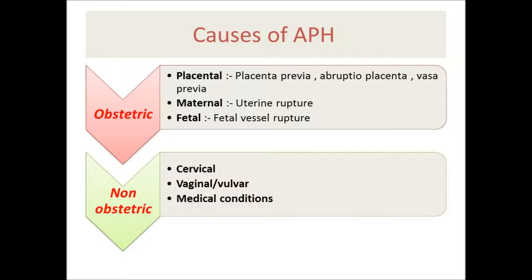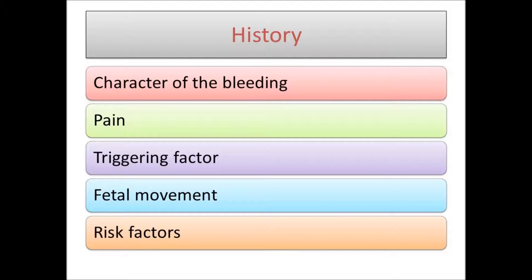Placenta previa and abruptio placentae account for two-thirds of antepartum hemorrhage cases, while all other causes account for the remaining one-third. I will focus in the next two videos on these two conditions. Now, how to approach a patient with antepartum hemorrhage: this depends on the amount of bleeding. If bleeding is very severe we must intervene as rapidly as possible, taking a rapid history.